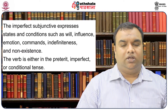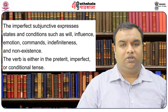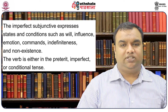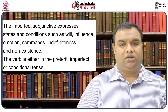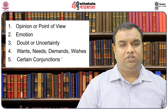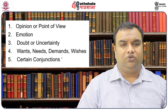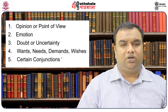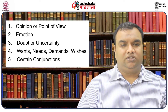The imperfect subjunctive is used when the context of the sentence is in the past. The verb that expresses the following is either in the preterit, imperfect, or conditional tense: wants, needs, demands, wishes; emotion; order, request, or advice; doubt or uncertainty; and certain conjunctions.